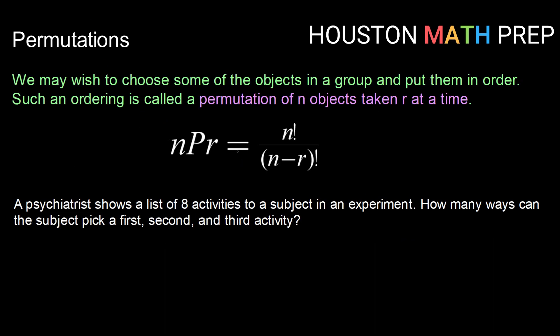Now many times, we may wish to choose some of the objects in a group and put them in order, rather than using all of the objects. Such an ordering is called a permutation of n objects taken r at a time. And that has a formula here. This is the notation for it. This says n permute r.